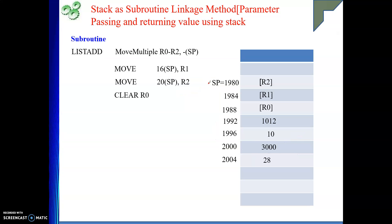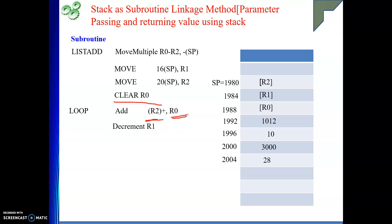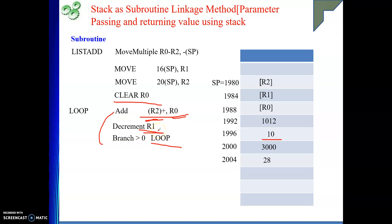Now we start processing. Clear R0 — this is our accumulator placeholder. Then ADD (R2)+, R0 — the first element is added with R0. Then DECREMENT R1 — the counter is decremented. We loop back as long as R1 is greater than 0: BRANCH GREATER THAN 0, LOOP. We keep doing this until the counter reaches 0, at which point we stop.